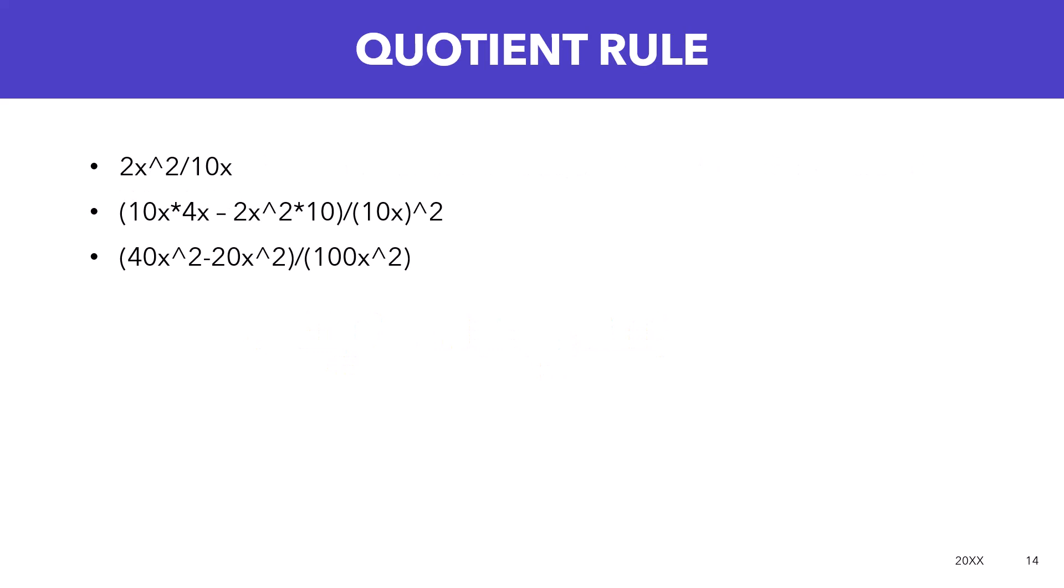You would then go low d high, so low 10x times the derivative of the high term, so the derivative of 2x squared equals 4x, minus high 2x squared times the derivative of the lower term, because low d high minus high d low, so that would just be 10, over the entire thing, the square of what's below, so just be 10x squared. So you end up with an answer of 40x squared minus 20x squared over 100x squared.